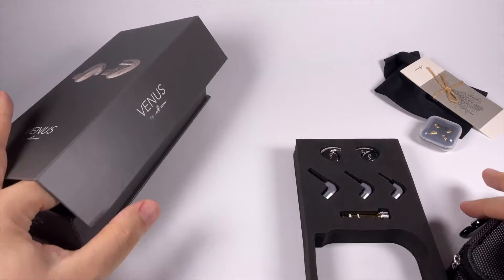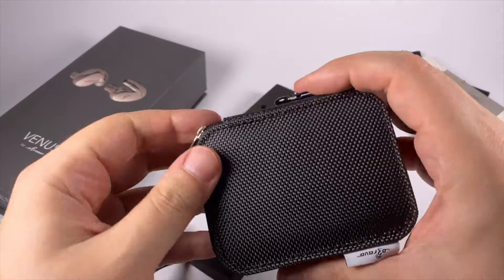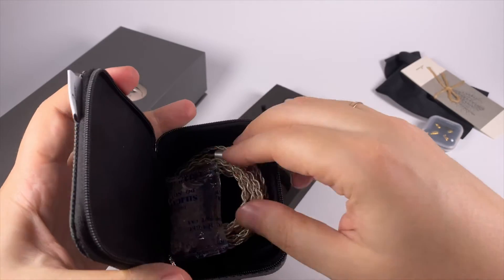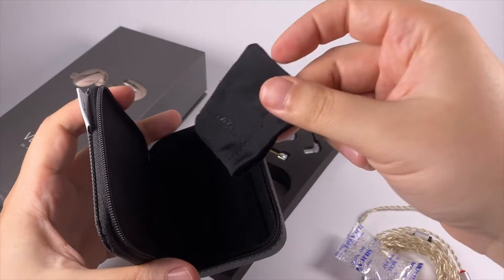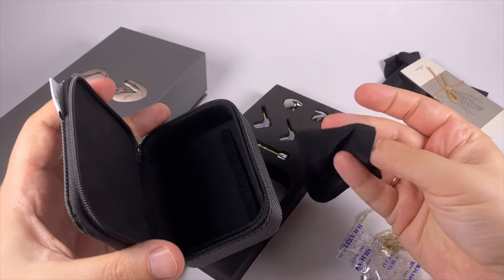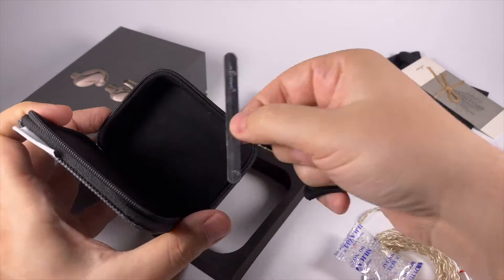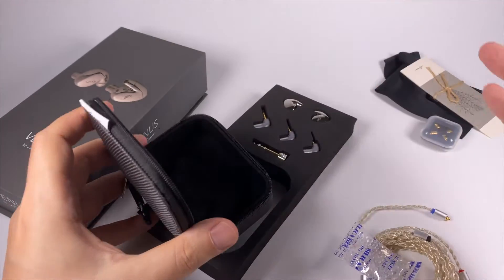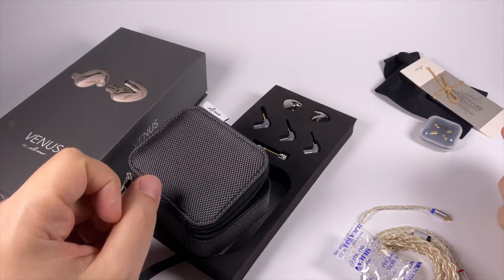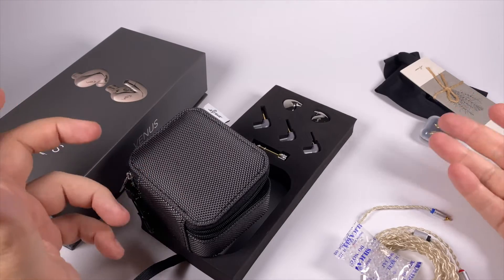As you can see, the accessory set is pretty good. Here we get the cable and some small pouch for storage, probably for ear pieces, and a strip of velcro for cable organization. Well as you can see, package and accessory set probably matches the segment that they are targeting.